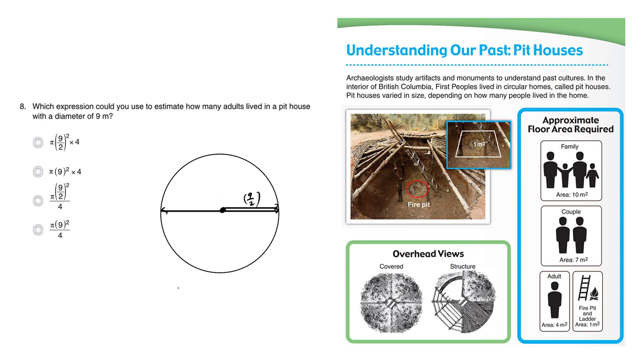So recall that the area of a circle is π r², and the radius here for this circle is 9 divided by 2.